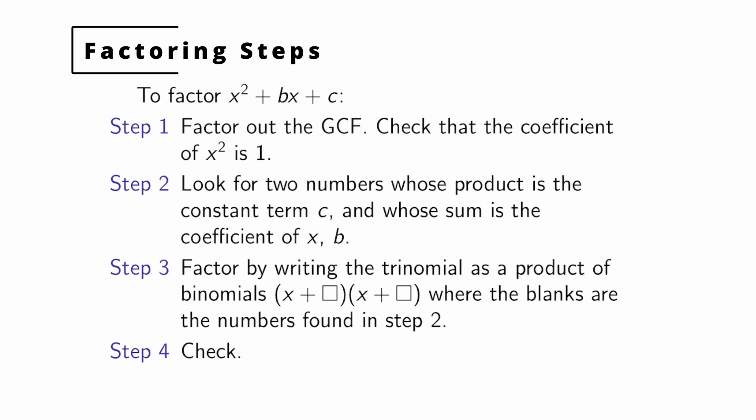Now what we're doing is we're looking for two numbers whose product is the constant coefficient c and whose sum is the coefficient of x, which we write down as b here. And to be clear, they may not exist—you may not be able to factor it.